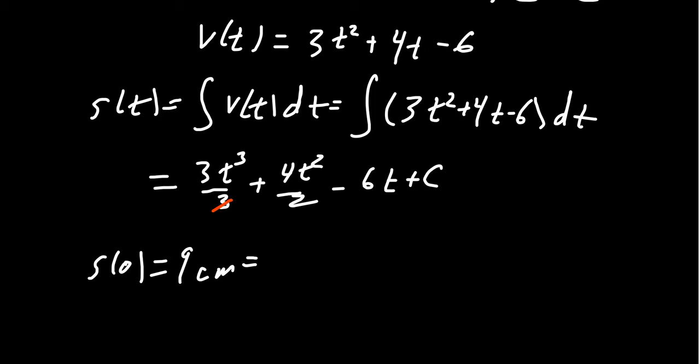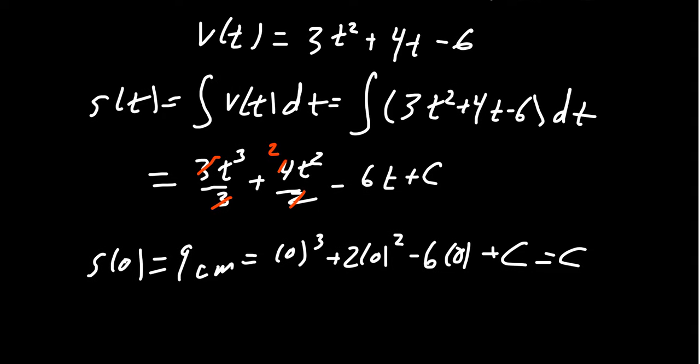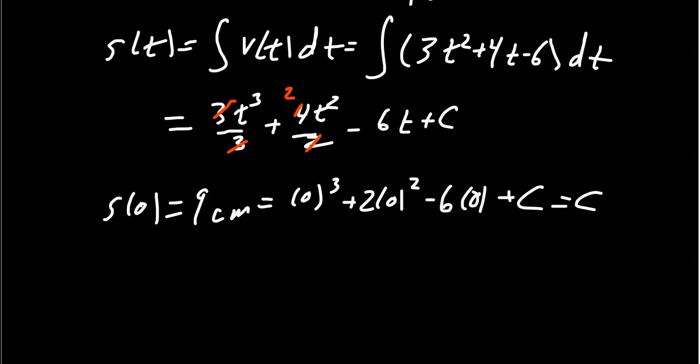We set this equal to—I guess I should simplify this thing a little bit first. The 3s there cancel, and then 2 goes into 4 two times, so we end up with 0³ + 2(0)² - 6(0) + C. And again, because of all those zeros, the right-hand side becomes C, so C is 9. So to finish this thing, we end up with our position function s(t) = t³ + 2t² - 6t + 9.